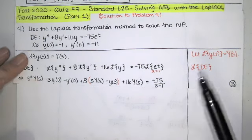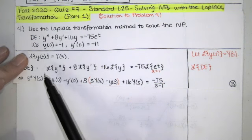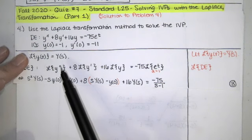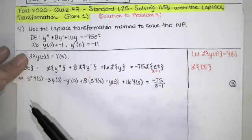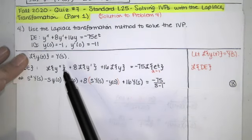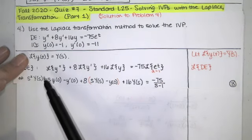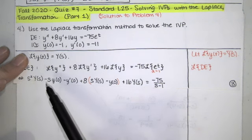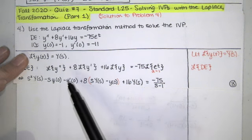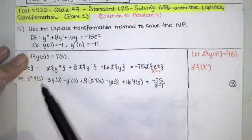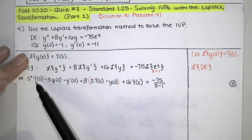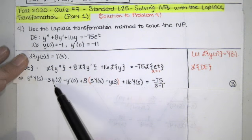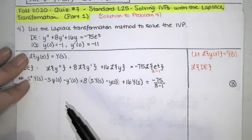The Laplace transform of the nth derivative always has n plus one terms. Since this is the second derivative, we have three terms. The first term starts with s squared, then minus s to the first, then minus s to the zero. Those powers of s are multiplied by big Y of s, minus little y at zero, and minus y prime at zero.